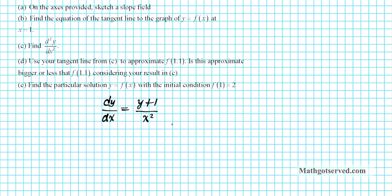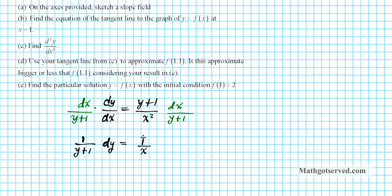So what does separation of variables mean? This basically means that you have like variables on the same side of the equation. We'll keep the y's on the left side and the x's on the right side. To accomplish that, I'll multiply both sides by dx — that will get rid of the dx on the left side. And then since there's y plus 1 up here, I'll also divide by y plus 1 on both sides. It's just like solving a typical algebraic equation for a specified variable. These cancel out, and we have 1 over (y + 1) dy equals 1 over x squared dx.